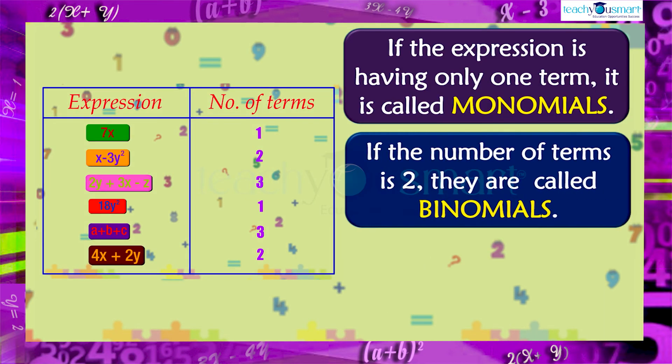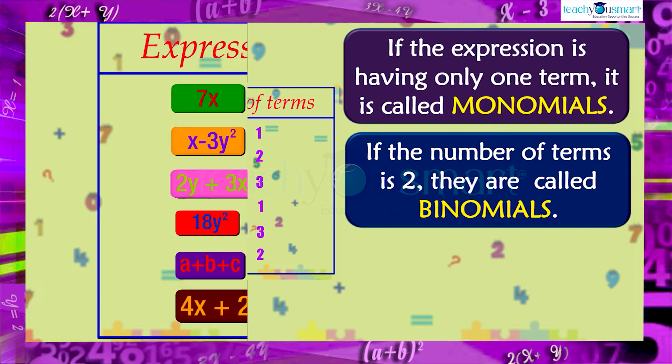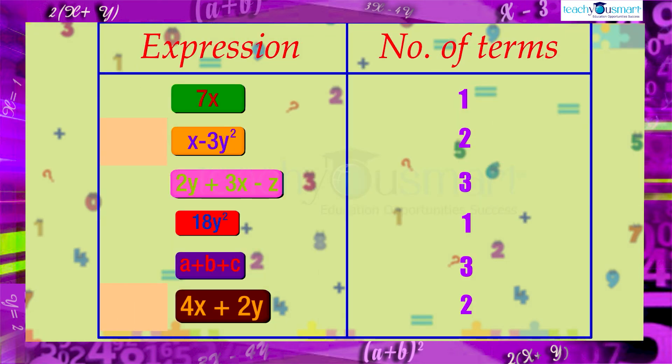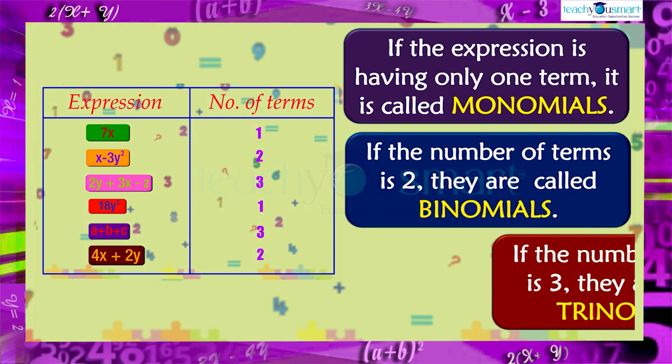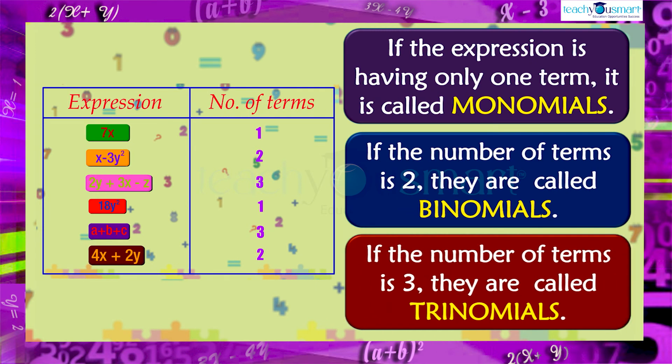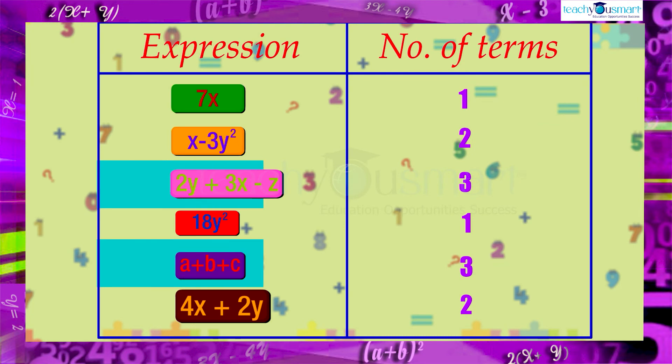If the number of terms is 2, they are called binomial. That is, x minus 3y square and 4x plus 2y are binomials. If the number of terms is 3, they are called trinomials. That is, 2y plus 3x minus z and a plus b plus c are trinomials.